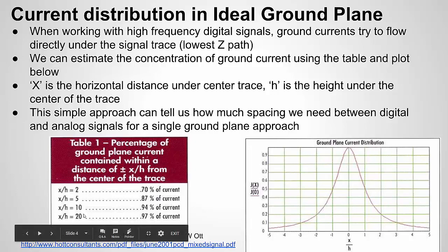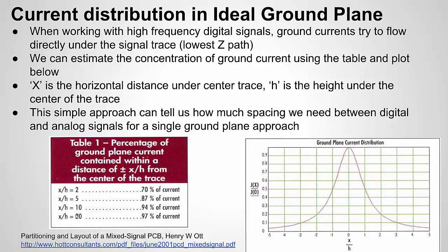For instance, if 97% is within a ratio of 20, then if you're at 30, 40, or 50, you probably have very little interference to worry about. This estimate helps you understand the size of the return current footprint so you can carefully plan how you lay out your circuit.